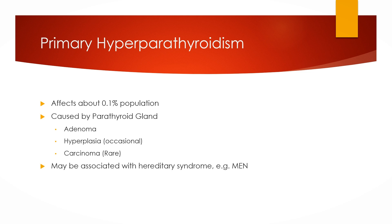It may also be associated with hereditary syndromes, for example multiple endocrine neoplasia. Primary hyperparathyroidism results in hypercalcemia and hypophosphatemia. Why hypophosphatemia? Because, as mentioned earlier, parathyroid hormone increases phosphate excretion in the urine.